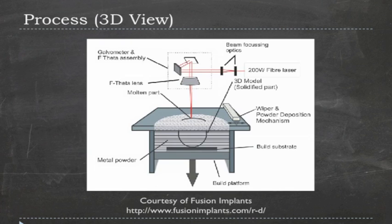How does the selective laser melting process work? There is a laser that is shot onto a mirror assembly — a scanning mirror mechanism that reflects the laser beam onto a bed of powder. This powder is usually metallic powder, deposited by the wiper. The wiper acts to flatten the powder on each layer.